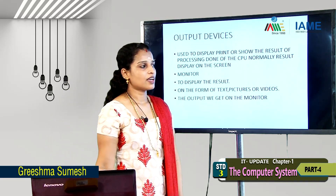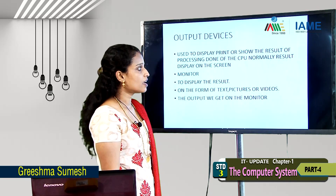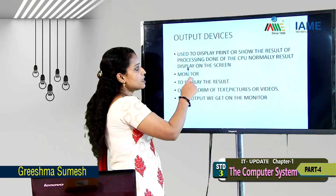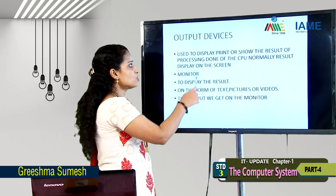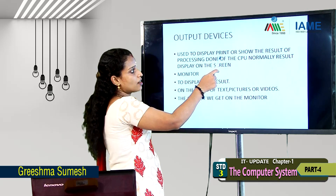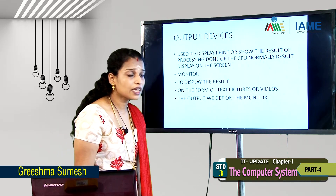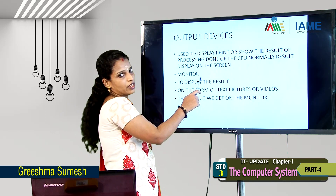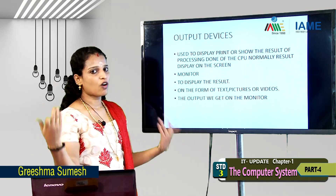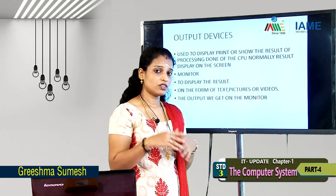Next, output devices are used to display, print, or show the result of processing done by the CPU. Normally the result is displayed on the screen. The first output device is the monitor, which displays the result in the form of text, pictures, or videos.